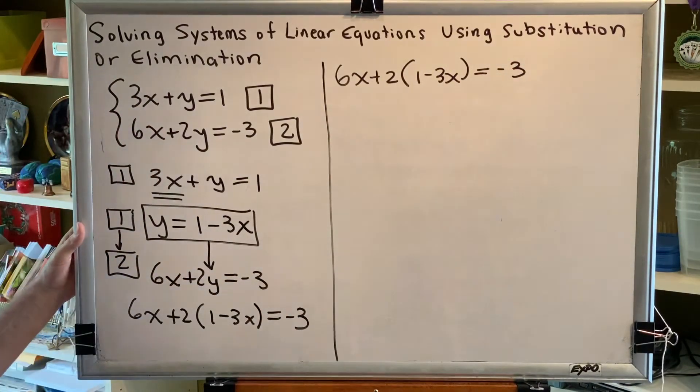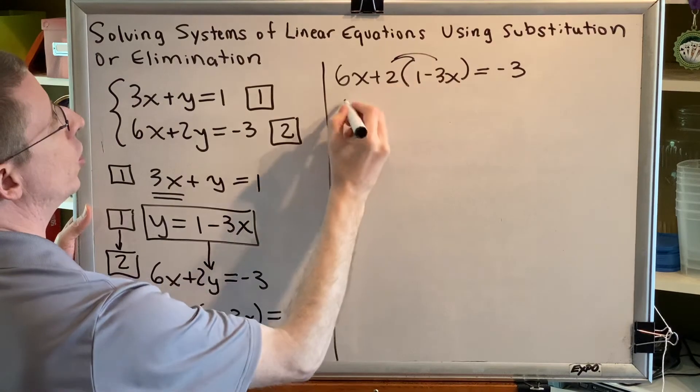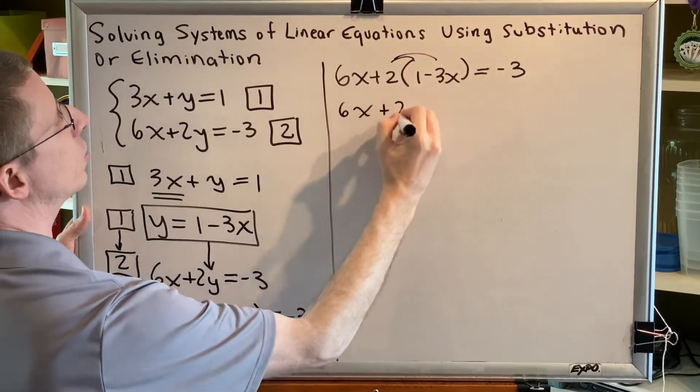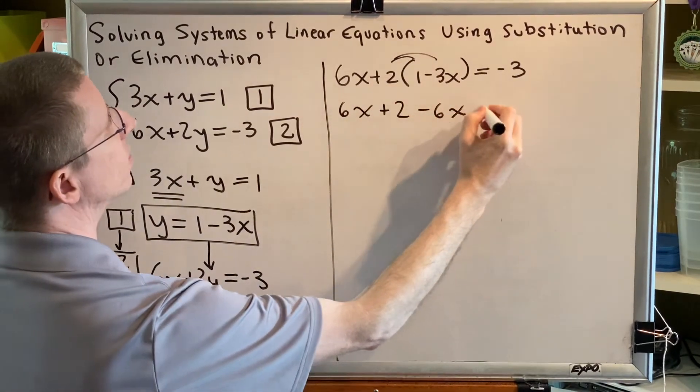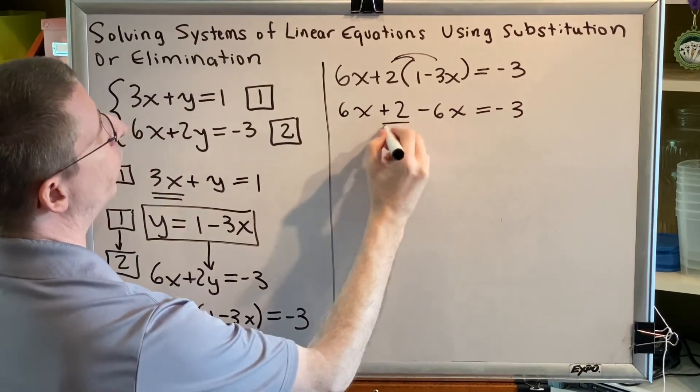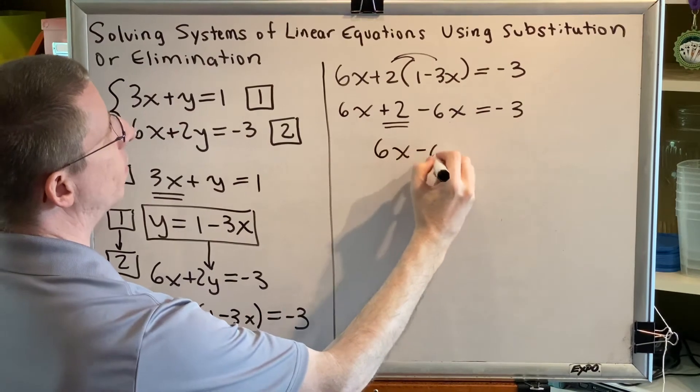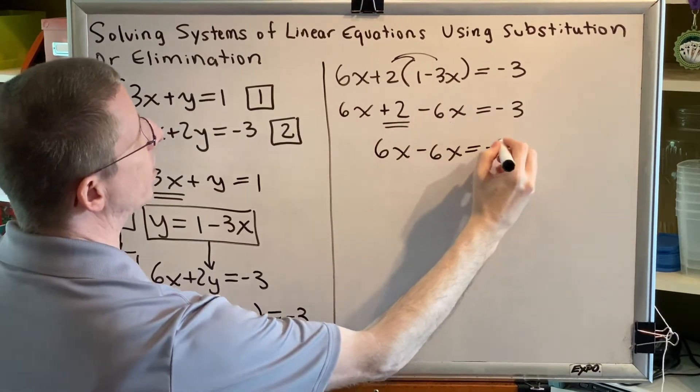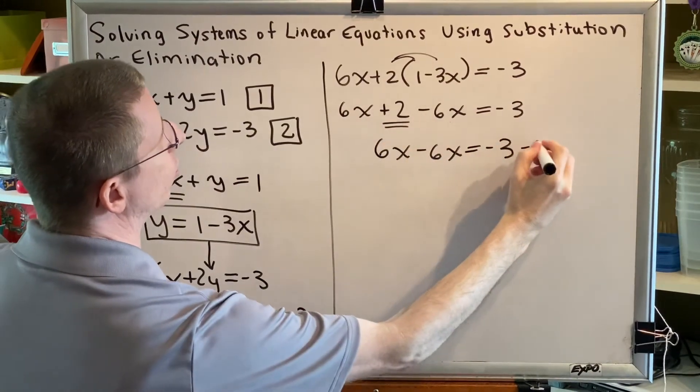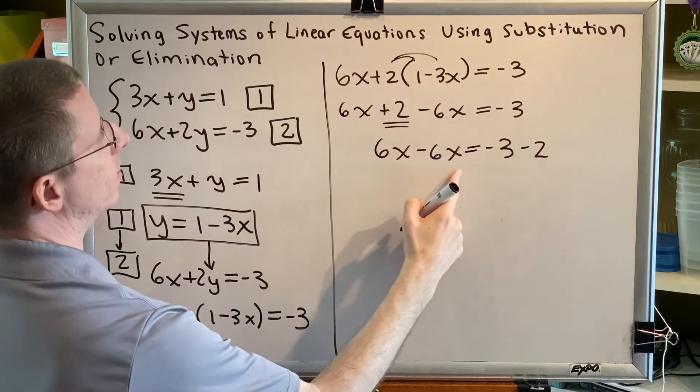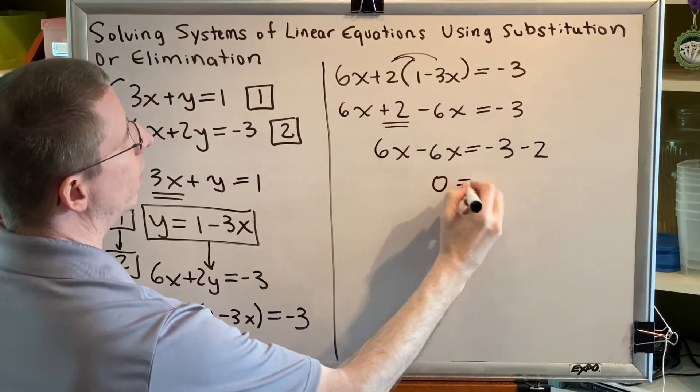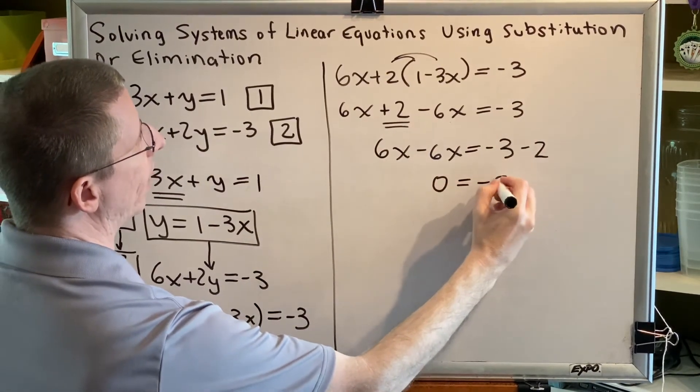Now we no longer have y. We can solve for x. Let's distribute. So we get 6x plus 2 minus 6x equals negative 3. We'll move this plus 2 to the other side. So then we have 6x minus 6x equals negative 3 subtract 2. 6x minus 6x is 0 and negative 3 minus 2 is negative 5.